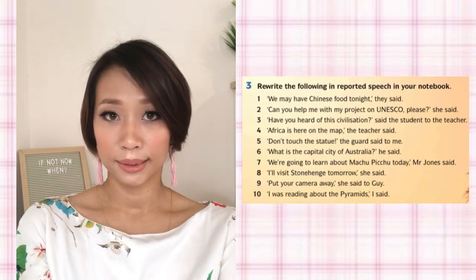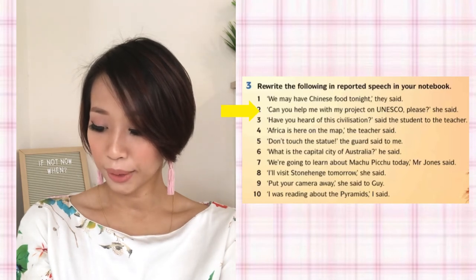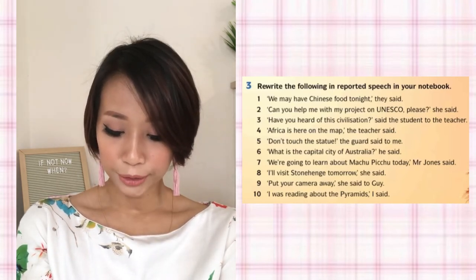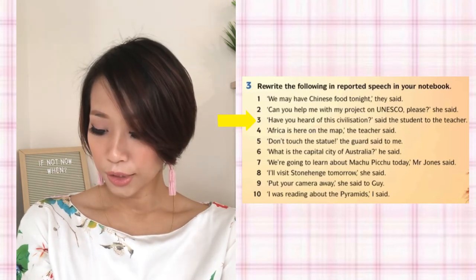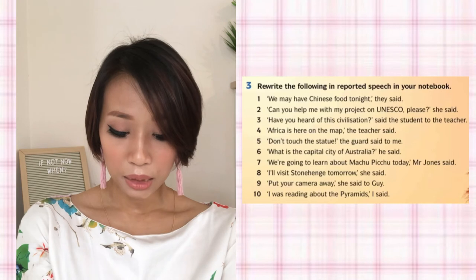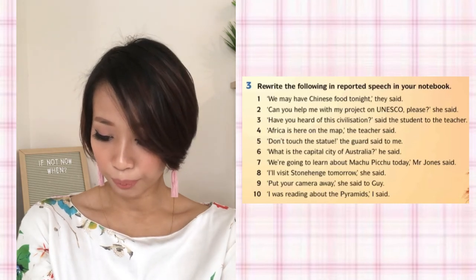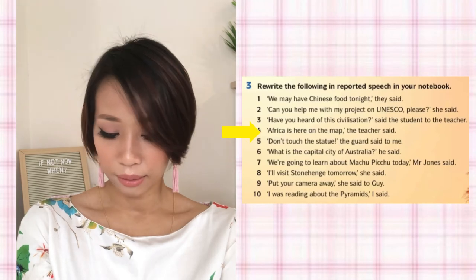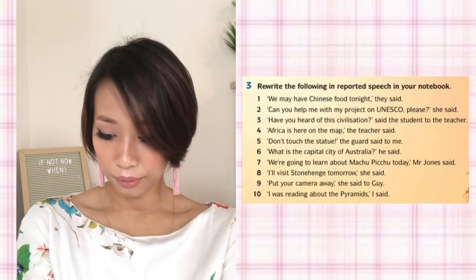Now let's go through all the other questions. Number 2: 'Can you help me with my project on UNESCO, please?' she said. Adakah anda boleh bantu saya dalam projek UNESCO saya, dia kata. Number 3: 'Have you heard of this civilization?' said the student to the teacher. Adakah anda pernah dengar tentang masyarakat ini, kata pelajar kepada guru. Number 4: 'Africa is here on the map,' the teacher said. Africa terletak di sini dalam peta, guru itu kata.